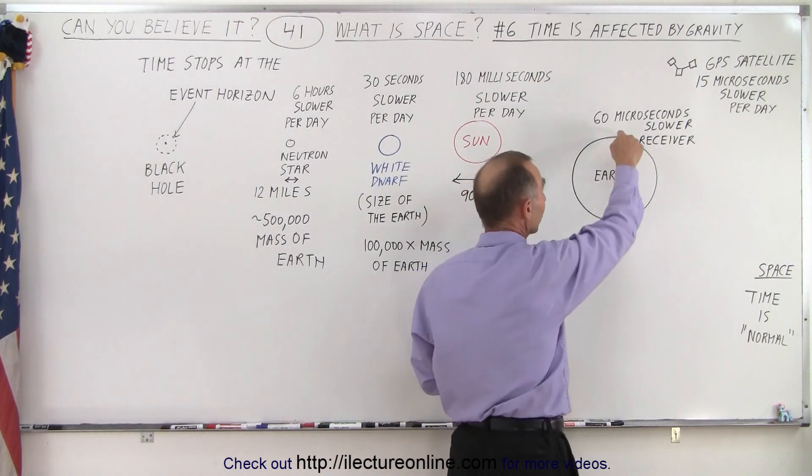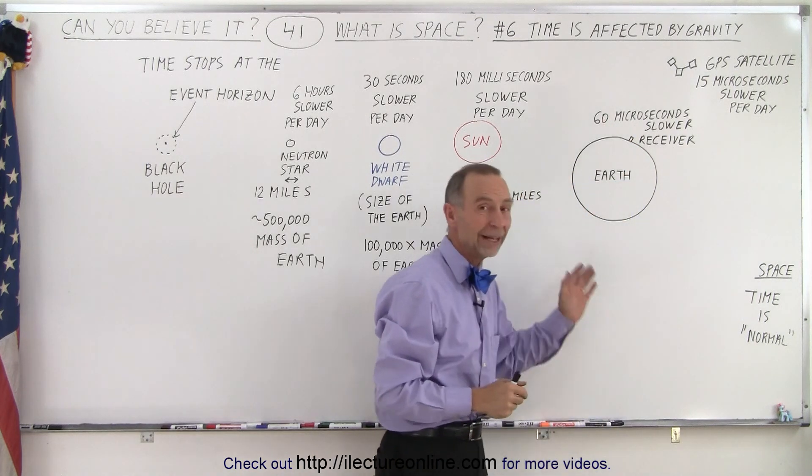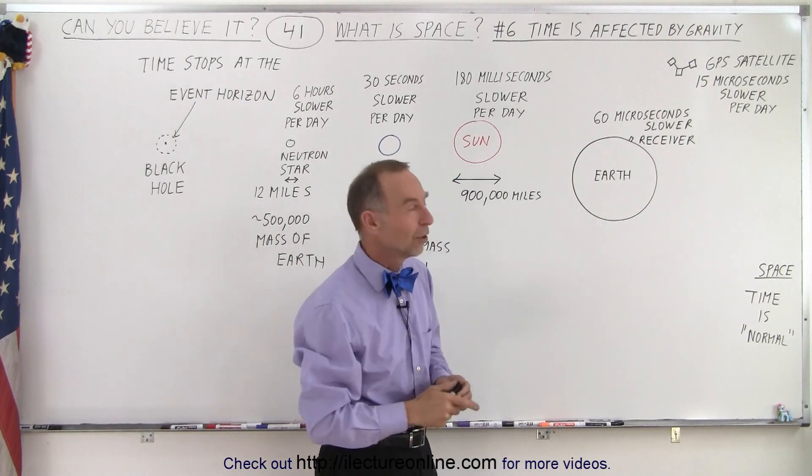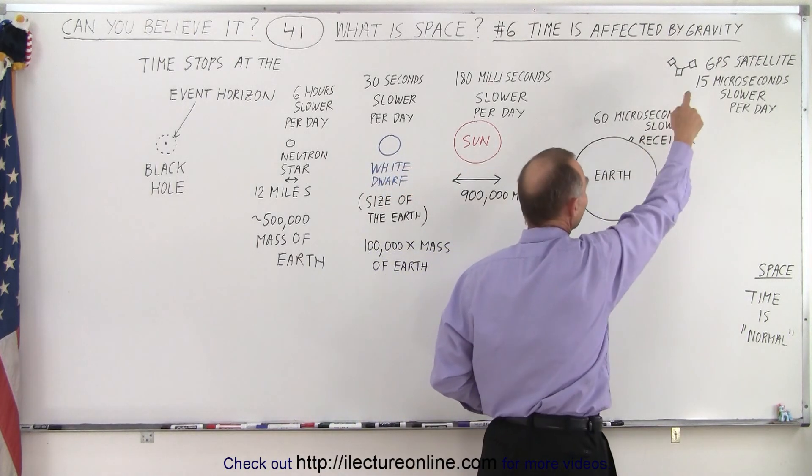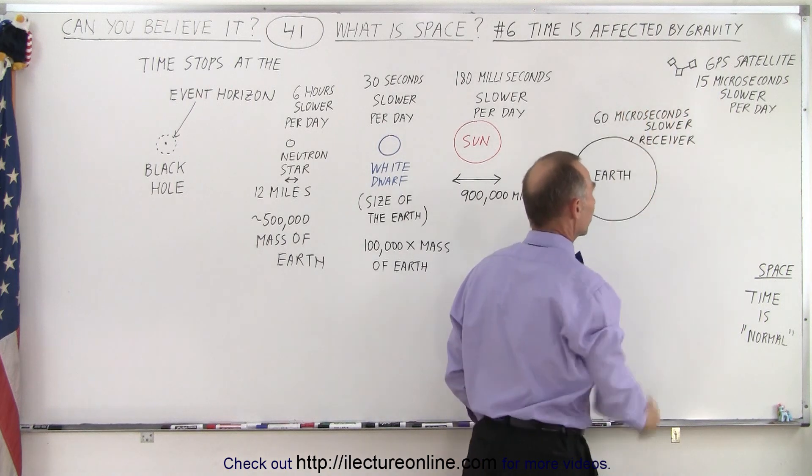And then on the receivers on the surface of the Earth, they run 60 microseconds slower than they would if they were out in space. So there's a difference of 45 microseconds between the clocks on the GPS satellites and the clocks on the receiver.